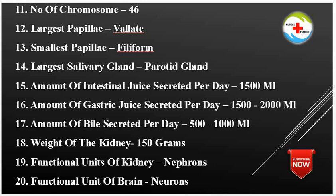Amount of Intestinal Juice Secreted Per Day: 1500 ml. Amount of Gastric Juice Secreted Per Day: 1500–2000 ml.